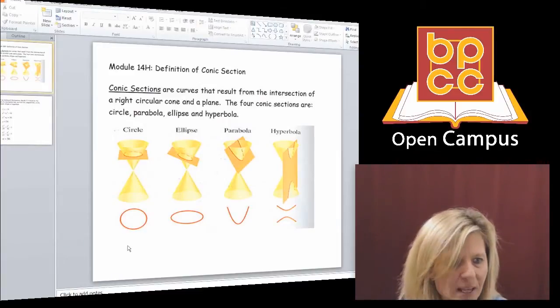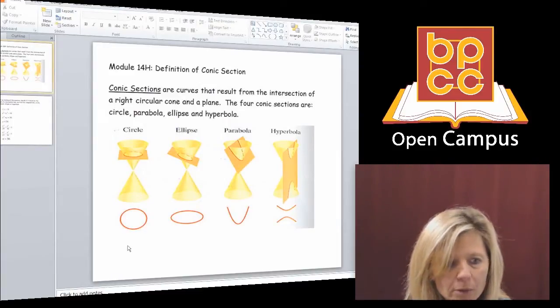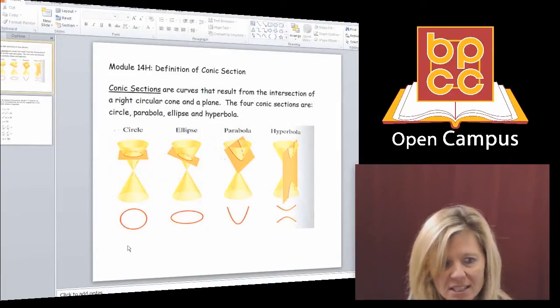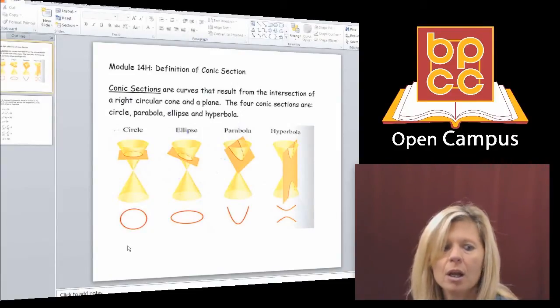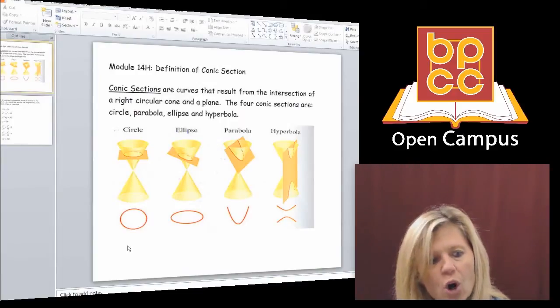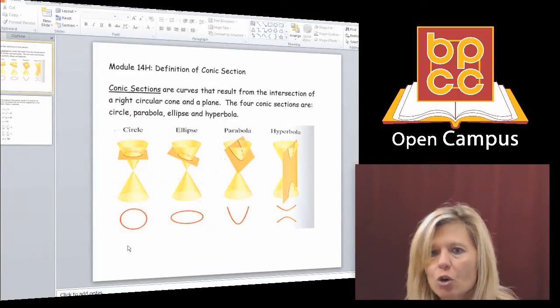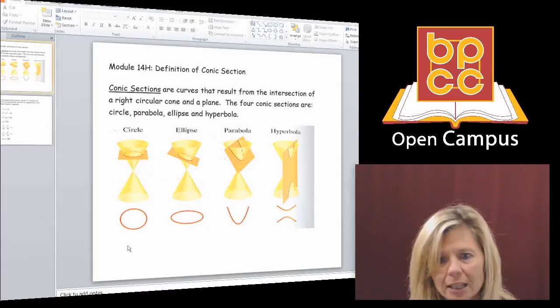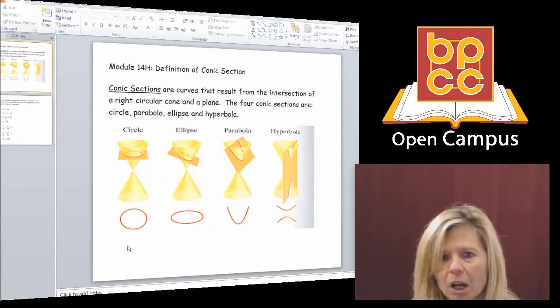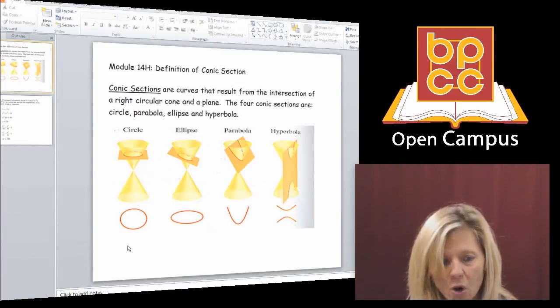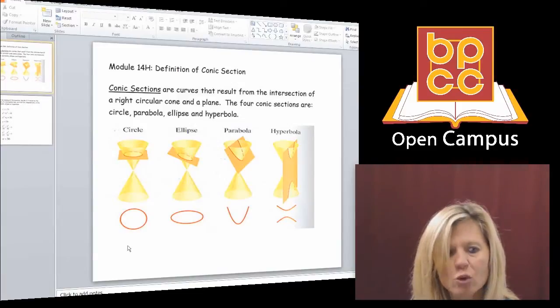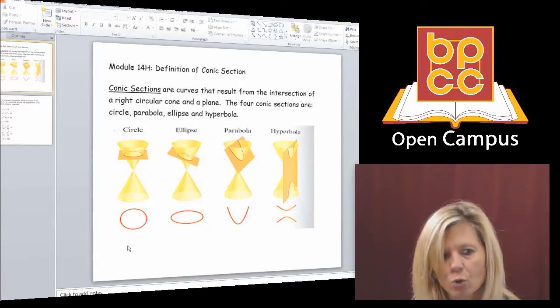So technically speaking, we form those curves in real life by cutting a cross section of an ice cream cone. A cone in math is called a conic. So you can call a circle, an ellipse, a parabola, a hyperbola conics because they're all formed by visually cutting a cone a certain way.